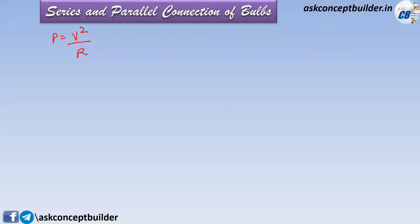Suppose we are given two bulbs: bulb 1 and bulb 2. Bulb 1 has power rating P1 and bulb 2 has power rating P2, with resistances R1 and R2 respectively. Given that P1 is greater than P2, we will now analyze the series and parallel conditions.